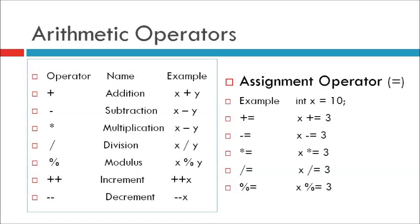Arithmetic operators are used to perform common mathematical operations. First operator is plus, name: addition — it adds together two values, for example x plus y. Operator minus, name: subtraction — it subtracts one value from another, for example x minus y. Operator multiply (*), name: multiplication — it multiplies two values, for example x * y.